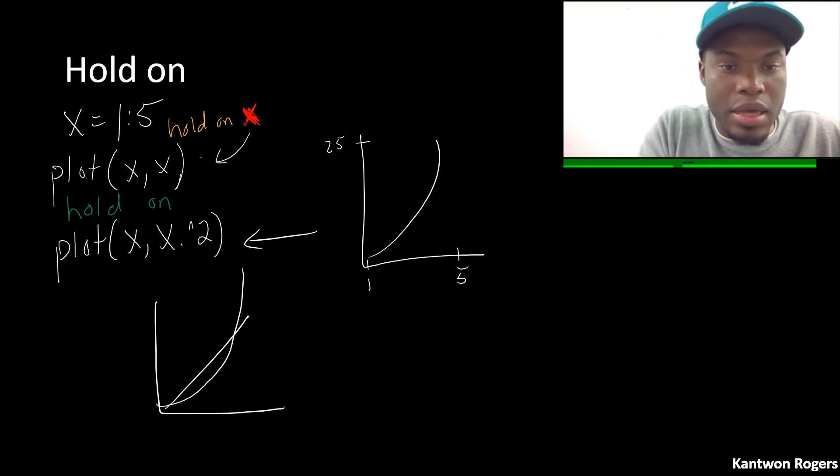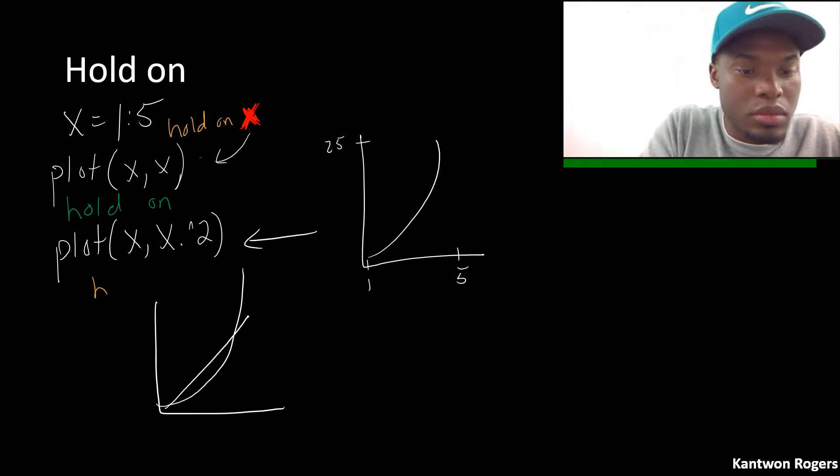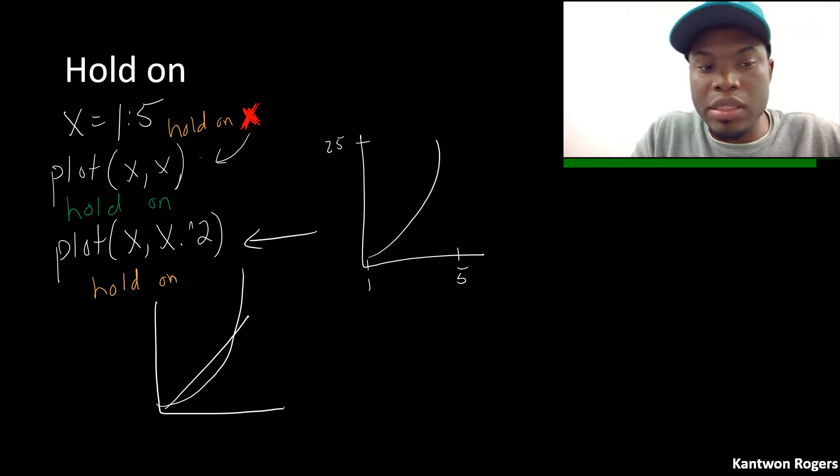I have to call hold on after I've at least plotted something once. If I were to call hold on afterwards, that would also be wrong because it would plot the first one, plot the second one, overwrite the first one, and then call hold on but then I've already done the damage. So you always want to call hold on after you've plotted something once and then afterwards everything after that will be added to the same plot.